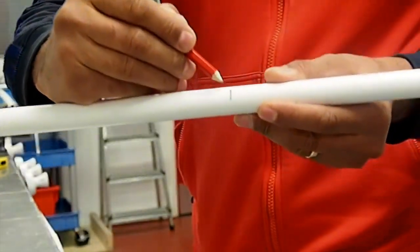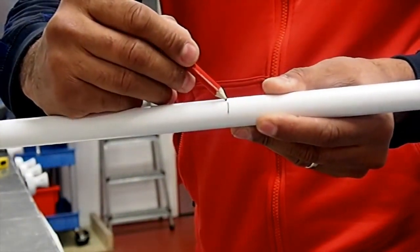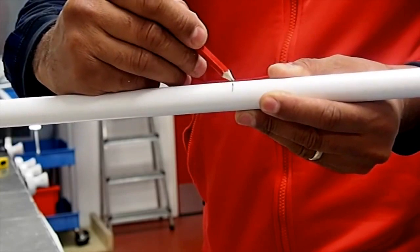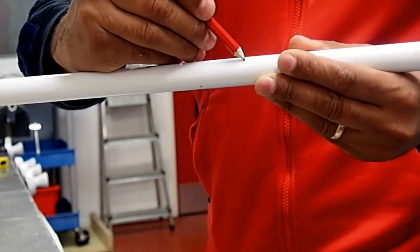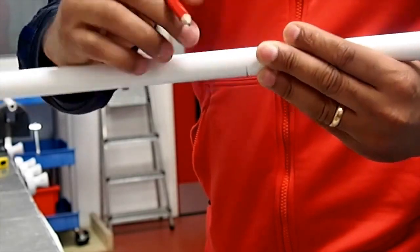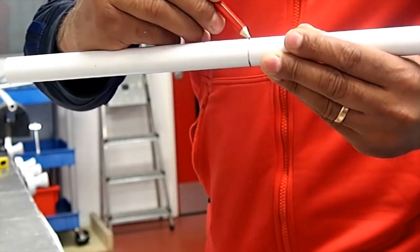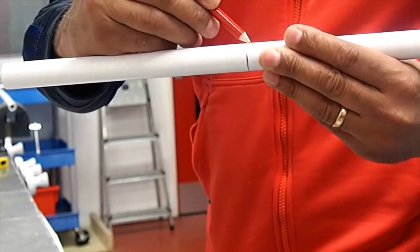As you can see, I've marked the centre mark there at 200 millimetres. Now extend that all the way around the conduit, just lightly marking it so you've got a guide as to where you want to produce your bend.